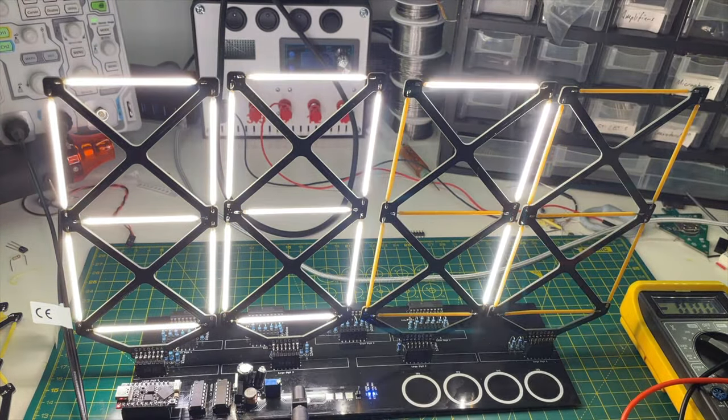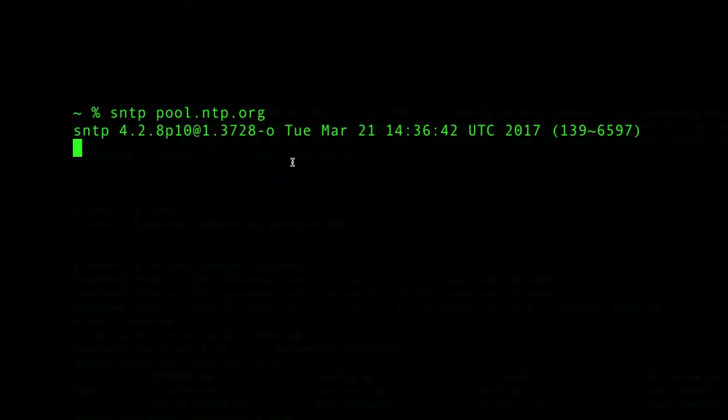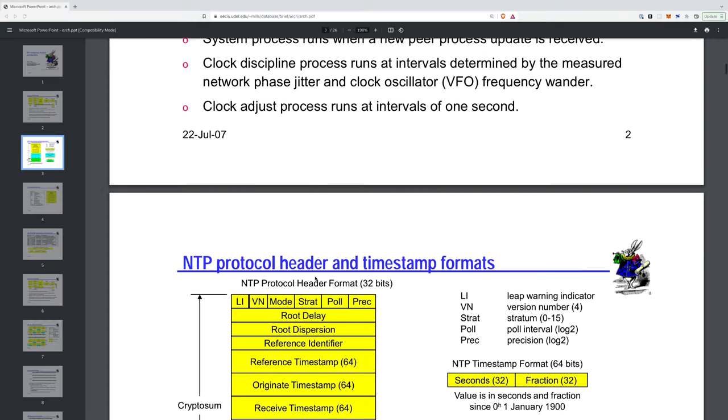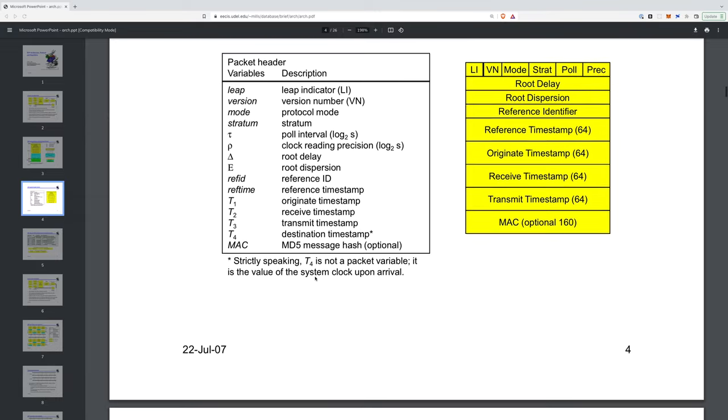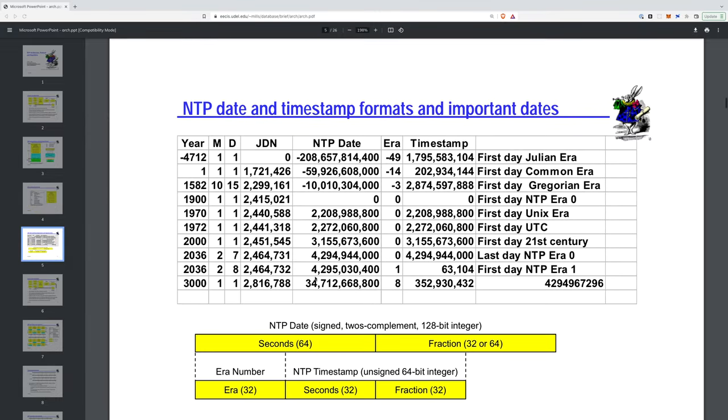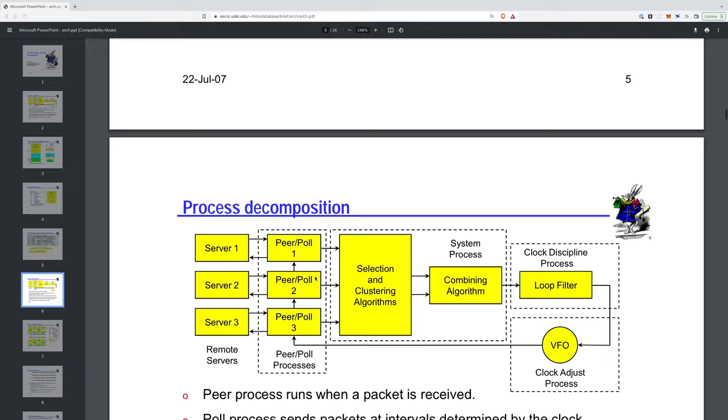So let's get on to the software. For the software I'm using the built-in library to get time from an NTP server. Network time protocol servers are publicly accessible machines that you can use to get the current date and time. Fortunately we don't need to worry about how this works as the library takes care of all the details, but if you're interested I'll do a video on the subject.